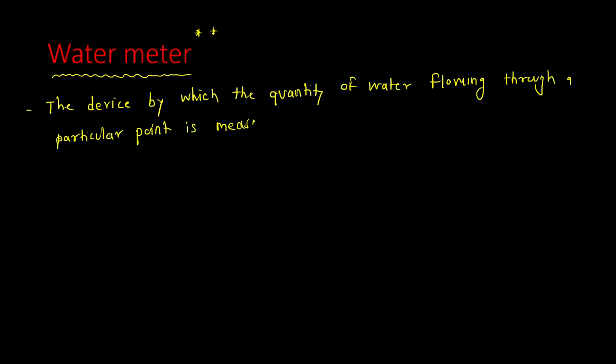Now we will write down these points. The device by which the quantity of water flowing through a particular point is measured is called a water meter.